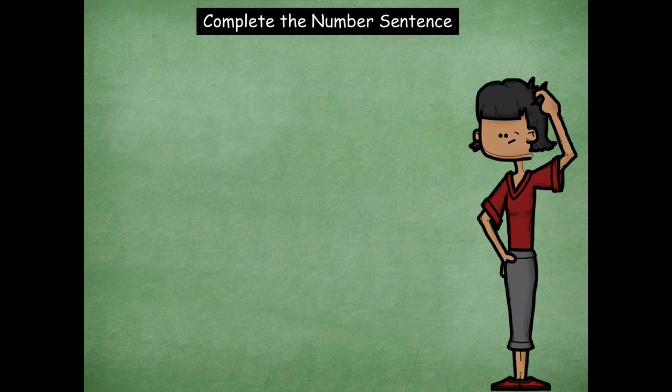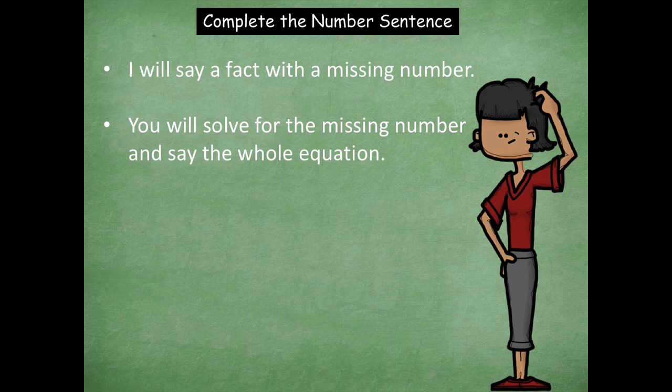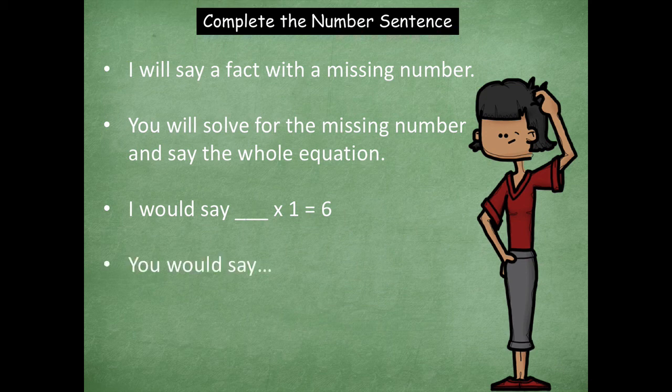So this next activity that we're going to do has to do with completing the number sentence. So there's going to be an unknown, or we're going to have to interpret the unknown and to be able to solve part of the problem. So I'll say a fact with a missing number. You'll solve for the missing number and say the whole equation. So I would say blank times 1 equals 6. You would say 6 times 1 equals 6.